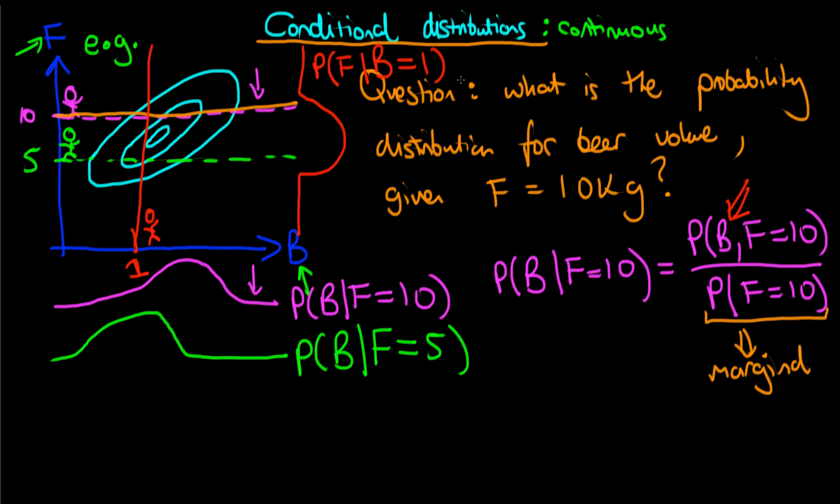So in summary, we see that the derivation of a conditional distribution for a continuous joint probability distribution is exactly the same as for the discrete case. We just take the joint distribution and we divide it through by the marginal.